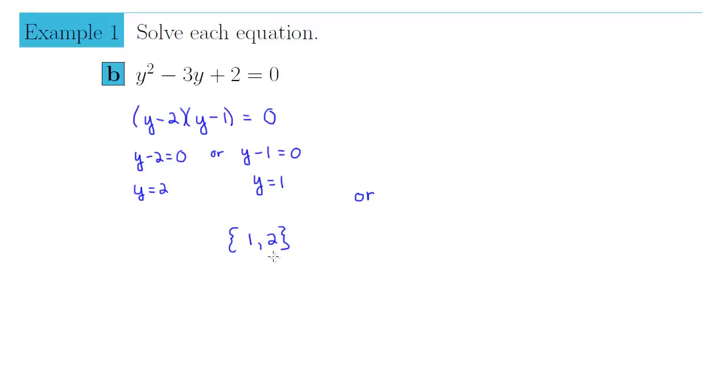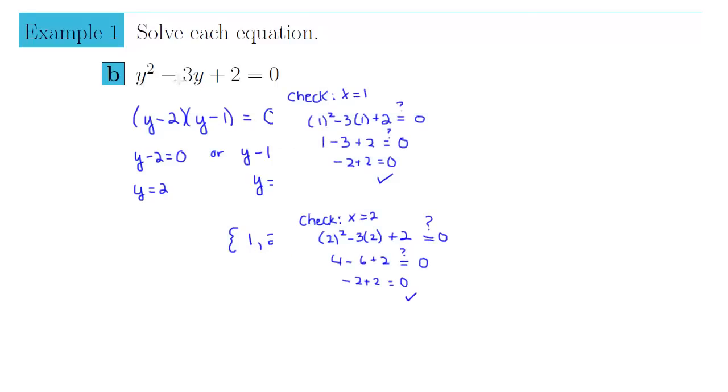Both of which, when substituted back into our original equation, will give us zero on the right side, thus solving that quadratic equation.